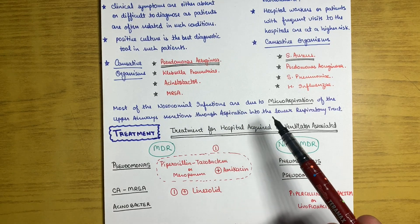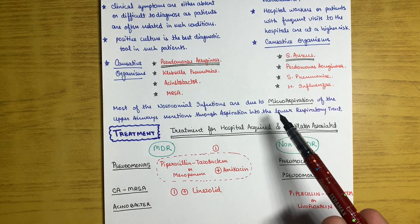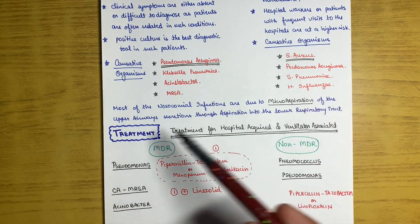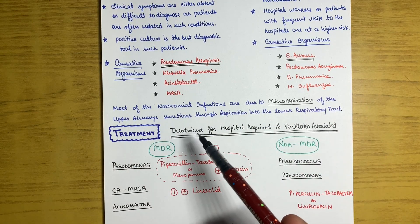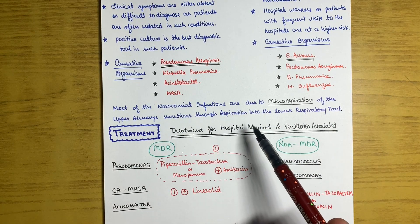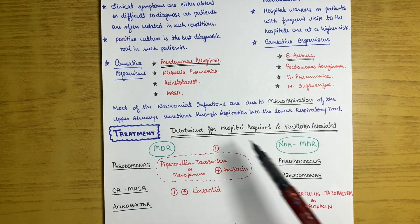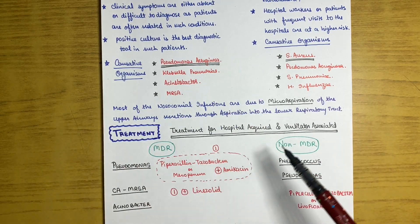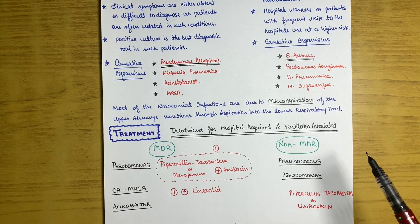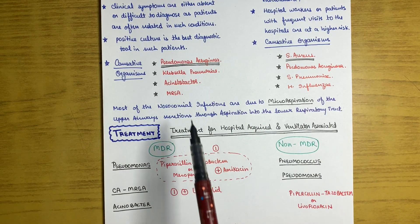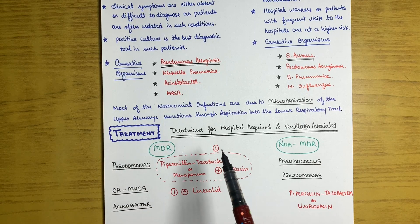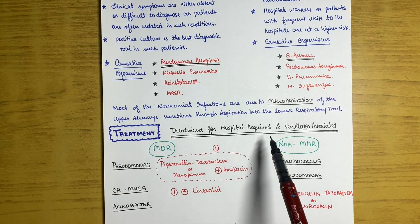Most nosocomial infections are due to micro-aspiration of the upper airway secretions into the lower respiratory tract. This micro-aspiration is the primary mode of transmission for hospital-acquired pneumonia. Now we can look at treatment.